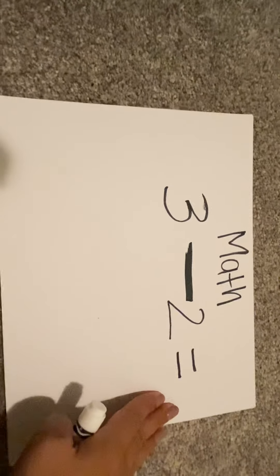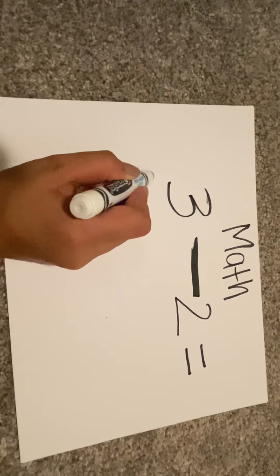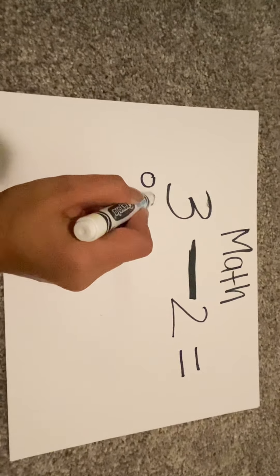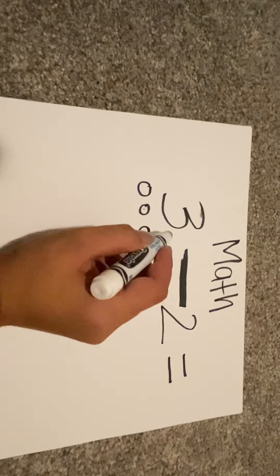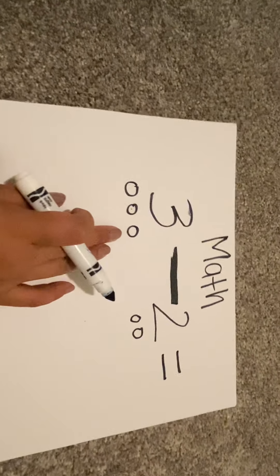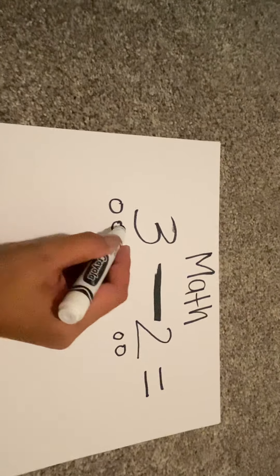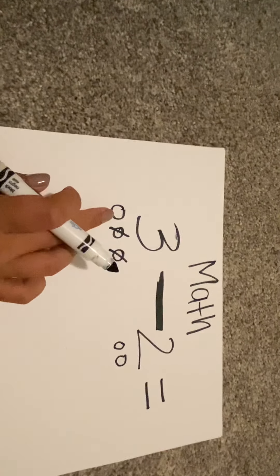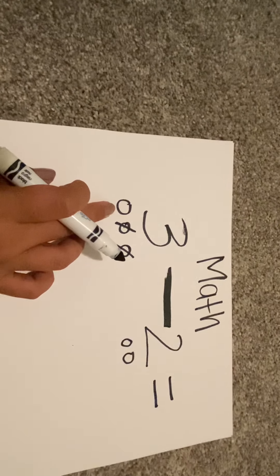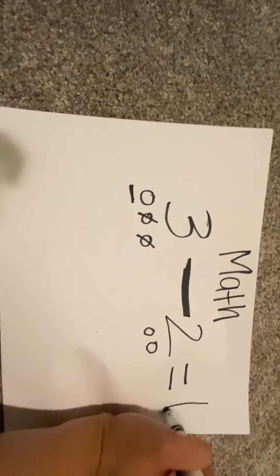So this is three. Let's do some circles: one, two, three. Minus two, so you have three. Now you're going to take away two: one, two. Take away. How many do you have left? One. So the answer for this problem will be one.